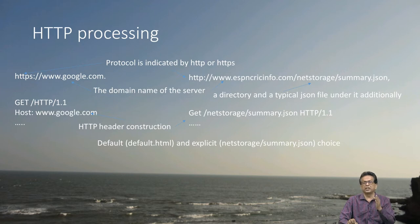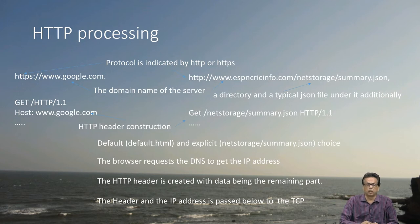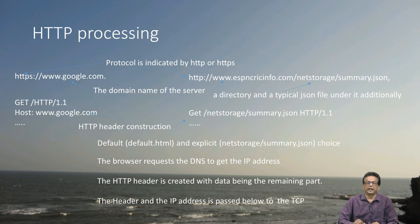In the right hand side case, you have explicitly specified, so nothing extra is added. The browser requests a DNS to get the IP address — this is something you have already seen before. The HTTP header is created with the remaining data. The GET HTTP 1.1 and all that is basically the HTTP header. The header and the IP address are passed to the TCP layer.